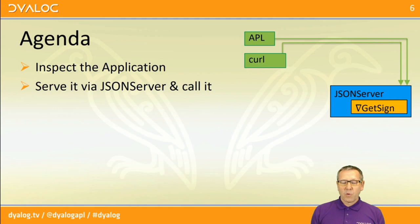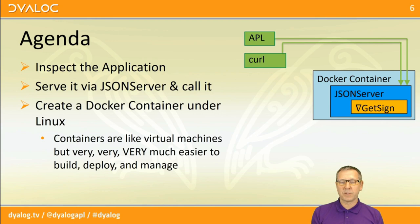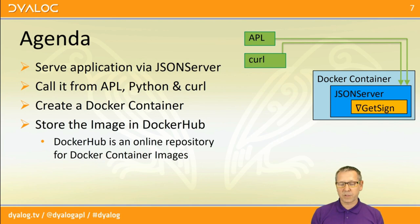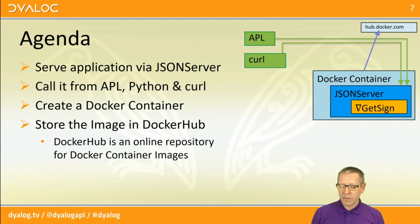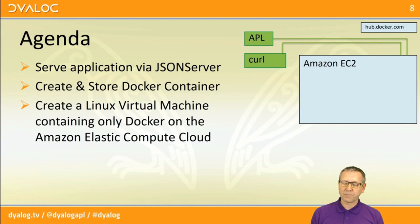Once we've got our JSON server up and running, we're going to create something called a Docker container and we're going to do that under Linux. Containers are very similar to virtual machines but they are very much easier and faster to build, deploy, and manage — and hopefully that's almost the main message of this presentation. Once we've created the Docker container, we're going to test it under Linux and when we're happy that it's working, we're going to store it in Docker Hub, which is an online repository for Docker images.